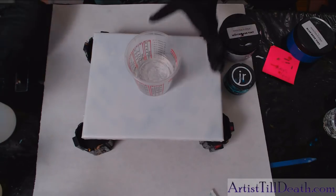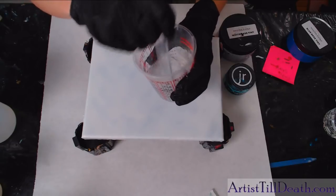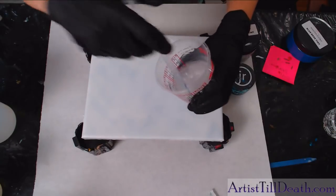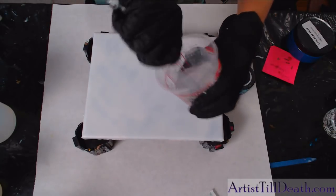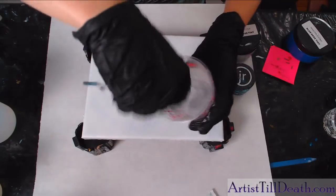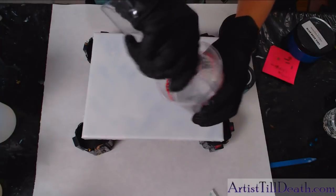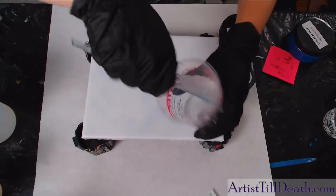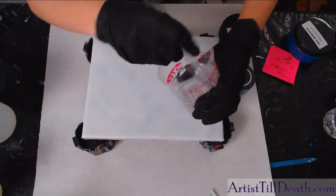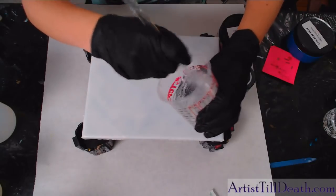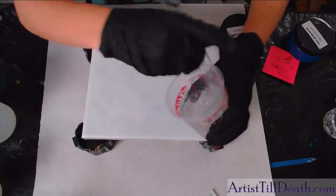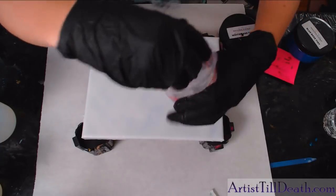This resin is a one-to-one, which means you need equal parts of the A and B. You need to make sure that you have equal parts because if you have more of one than the other, your resin won't set up properly. The bottle says to mix for two or three minutes, but since this is such a small quantity, I'm just going to mix until I'm sure that both the part A and the part B are fully incorporated into each other.